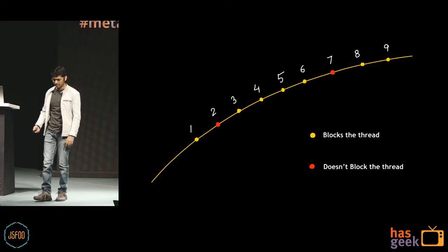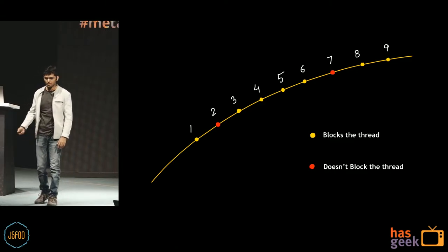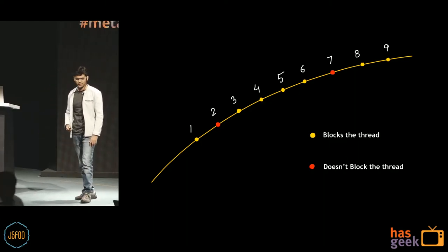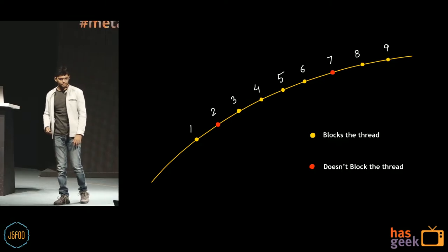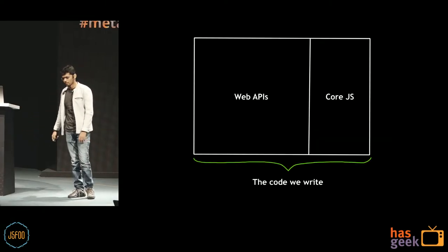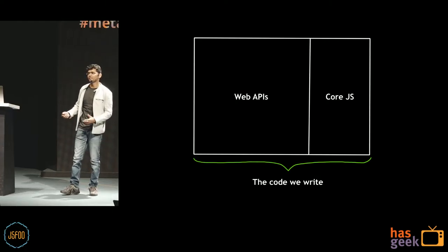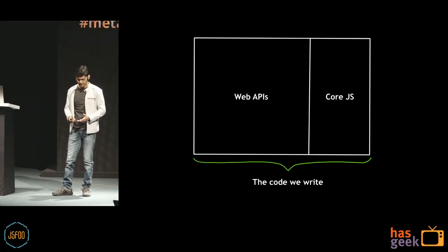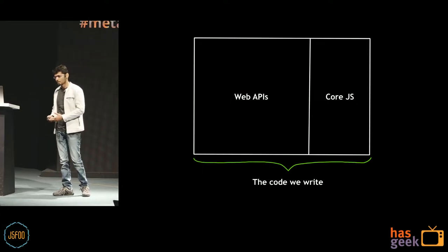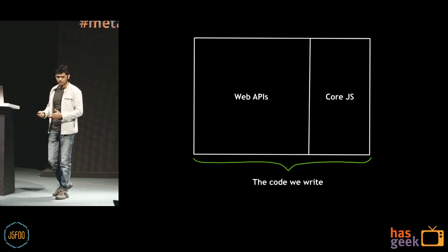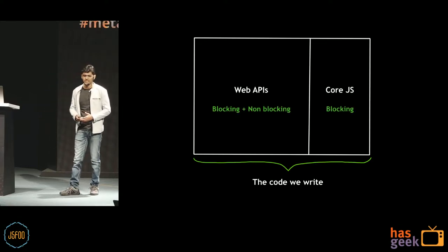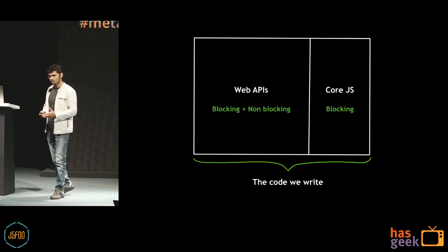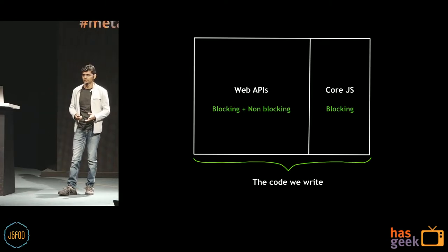But if JS is single-threaded, all the code should be blocking. So where does that red code come from which doesn't block the thread? To understand that, we have to understand that the code we write actually consists of two parts: web APIs and core JavaScript. Core JavaScript is blocking, and there are some web APIs that are non-blocking — most of them are blocking, but a few are non-blocking.